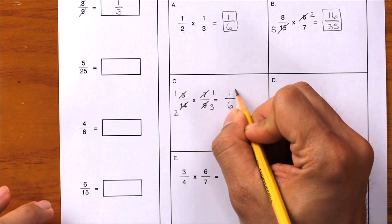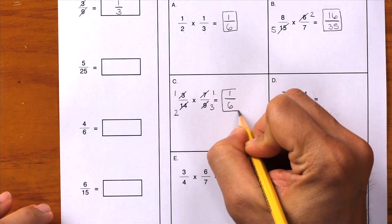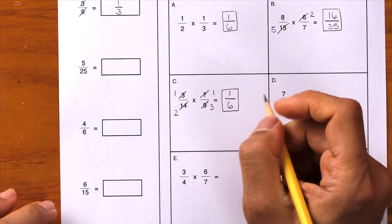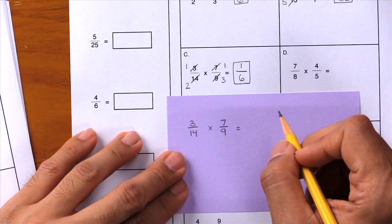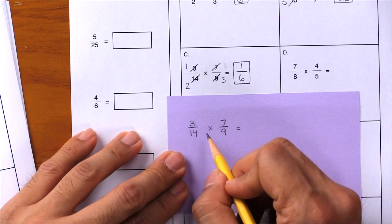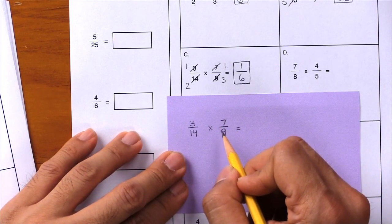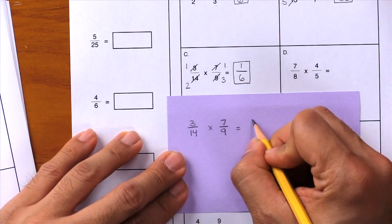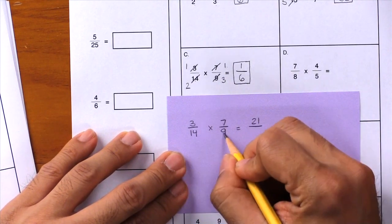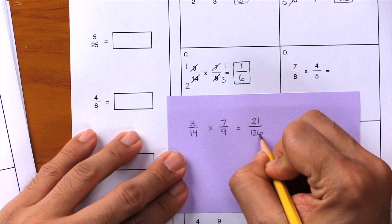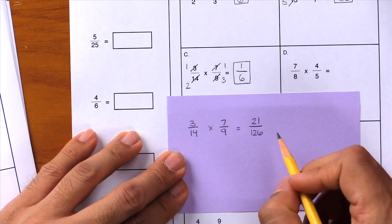If we didn't simplify first, we'd end up with larger numbers that are harder to work with. Look at the example that we just completed. Here's 3/14 times 7/9. If we multiplied first, we'd end up with 21/126, then we'd have to figure out how to simplify this to end up with our answer of 1/6.